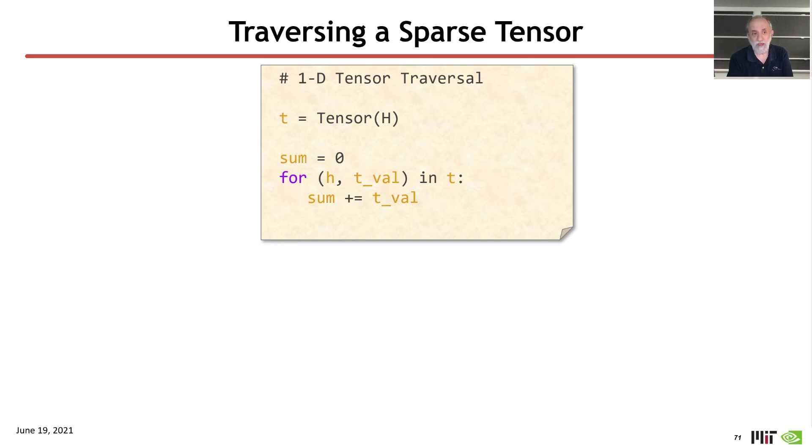which is simply to sum the payloads or values of every element of the fiber. So, I write this loop as sum equals 0, start with a value of 0, and then I'm going to iterate over the fiber T, because if I have a tensor with one rank, it's equivalent to having the fiber of the top rank.